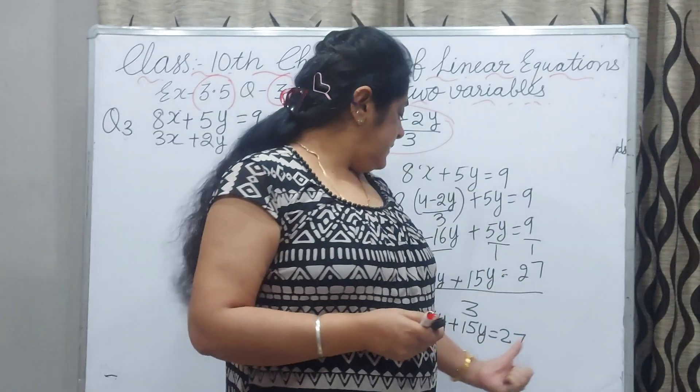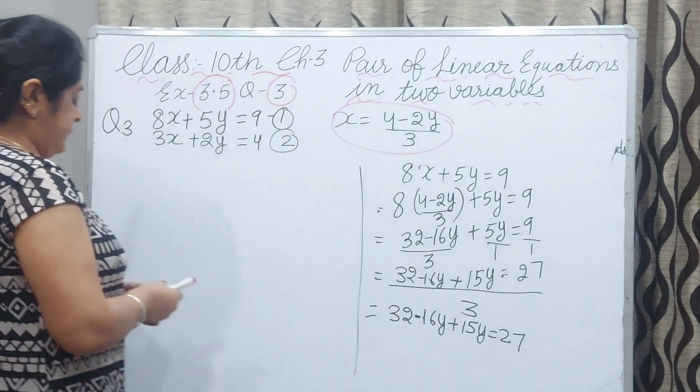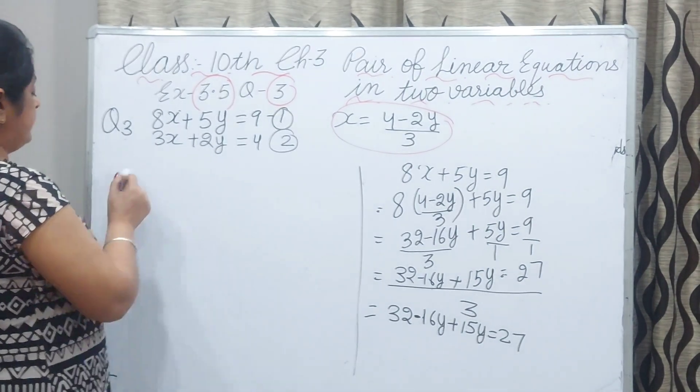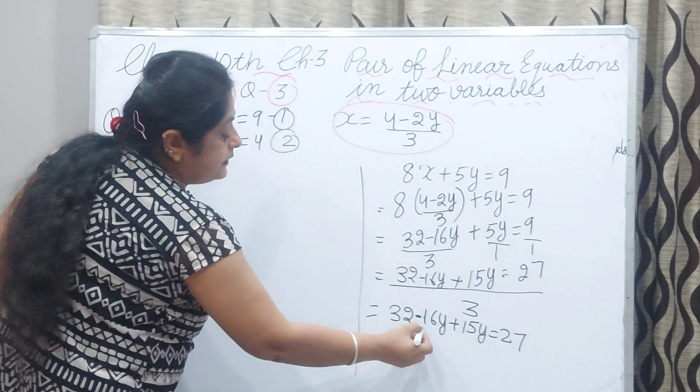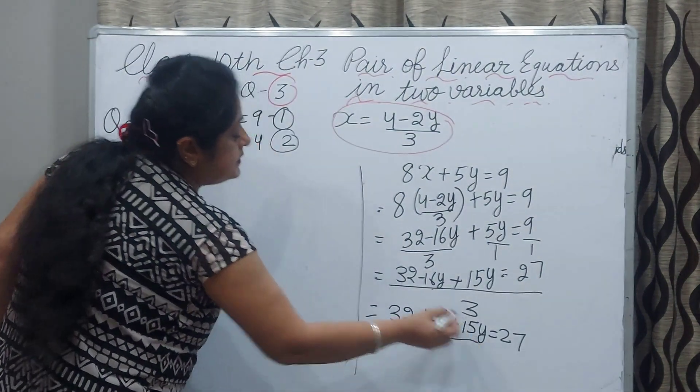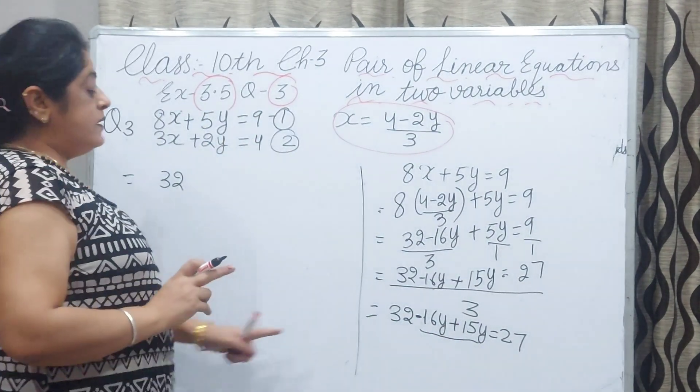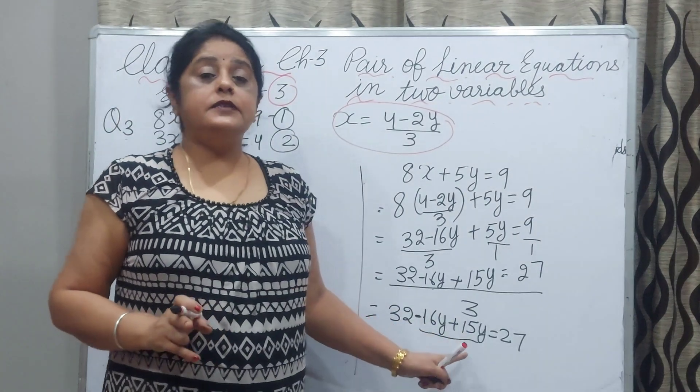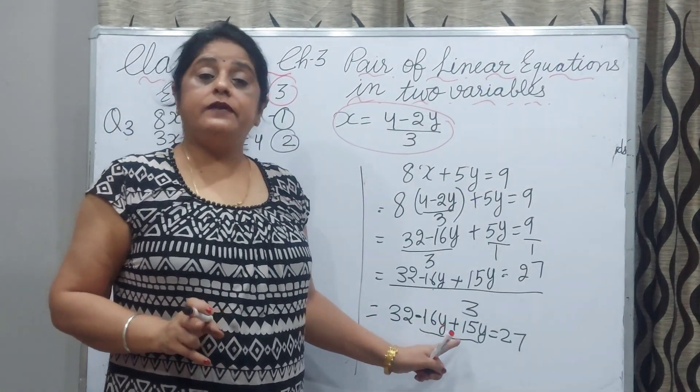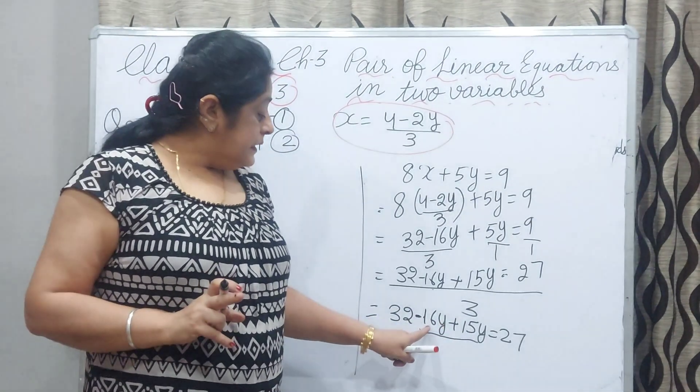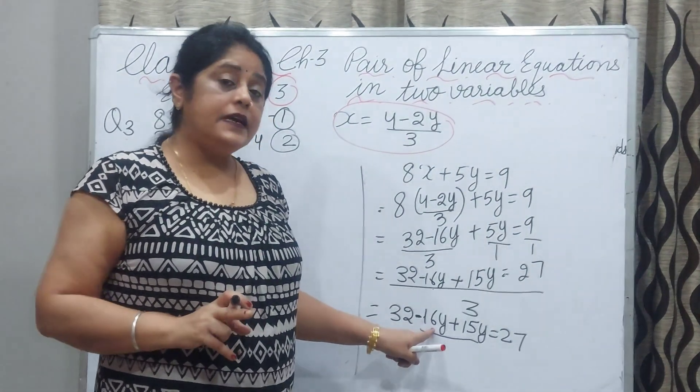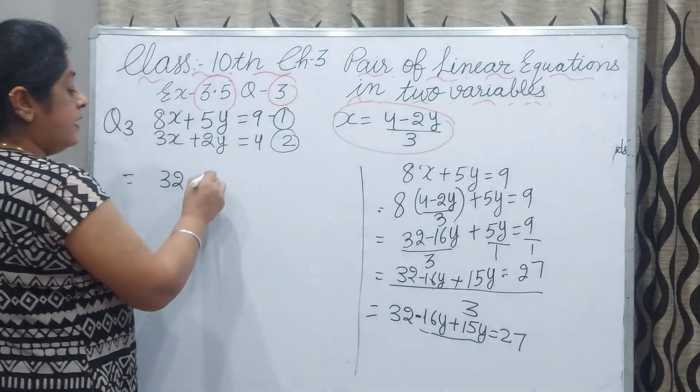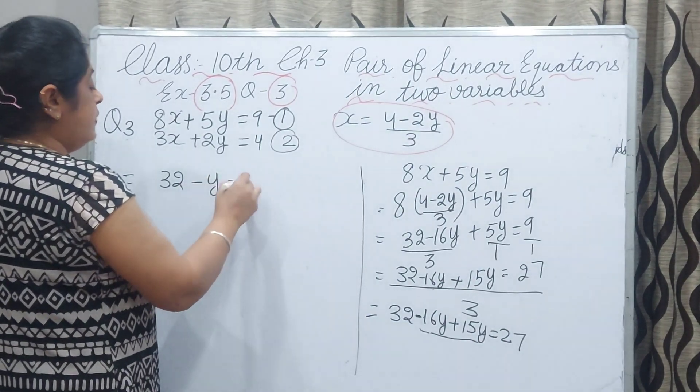Now we will solve this equation. 32 and this is minus 16y and this is plus 15y. One sign is minus and one sign is plus. We will subtract and sign will be the larger one. Minus sign will be there because 16 is larger. Minus y equals 27.